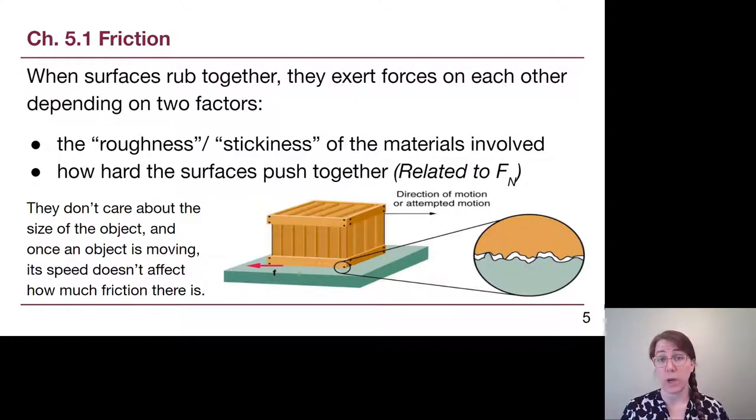When surfaces rub together, they exert forces on each other depending on two different factors. The roughness or stickiness of the material involved. So if I had two gloves that were made out of that kind of sticky material, kind of like gardening gloves, or if I had two pieces of sandpaper, it is harder to rub them together. But if I had two pieces of ice, I could rub those together very easily. Separately, once we know what the materials are made out of, the other thing that makes friction be a larger number or a smaller number is how hard those surfaces push together.